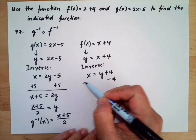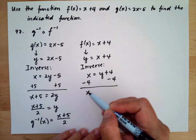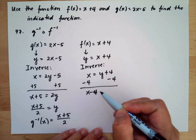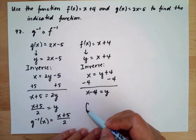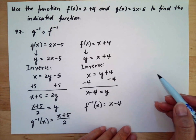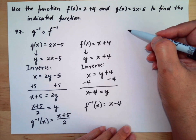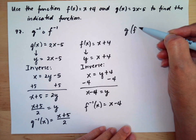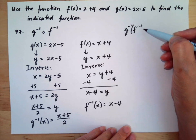Subtract 4 from both sides. So x - 4 = y. The inverse of f(x) is x - 4. Now we'll compute the composition of these inverses.